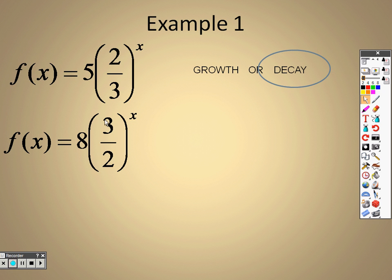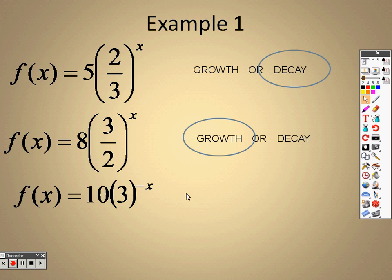On the next one, three over two is a fraction. However, three divided by two is one and a half, meaning it might be a fraction but it's a fraction greater than one. So because it's a fraction that's greater than one, it isn't decay anymore. Remember, it needs to be between zero and one, and this is 1.5. So this is a fraction but it's not between zero and one, meaning it's actually a growth function.